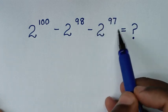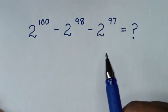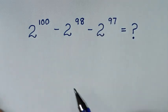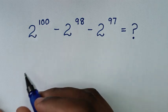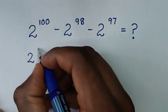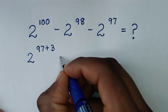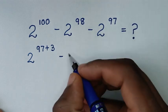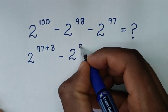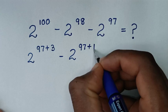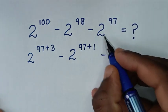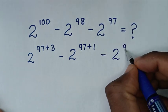Now from this 2 power of 97 is the smallest exponent so we make this in common. So from this 2 power of 100 is the same as 2 power of 97 plus 3, then minus 2 power of 98 is the same as 2 power of 97 plus 1, then minus this 2 power of 97.